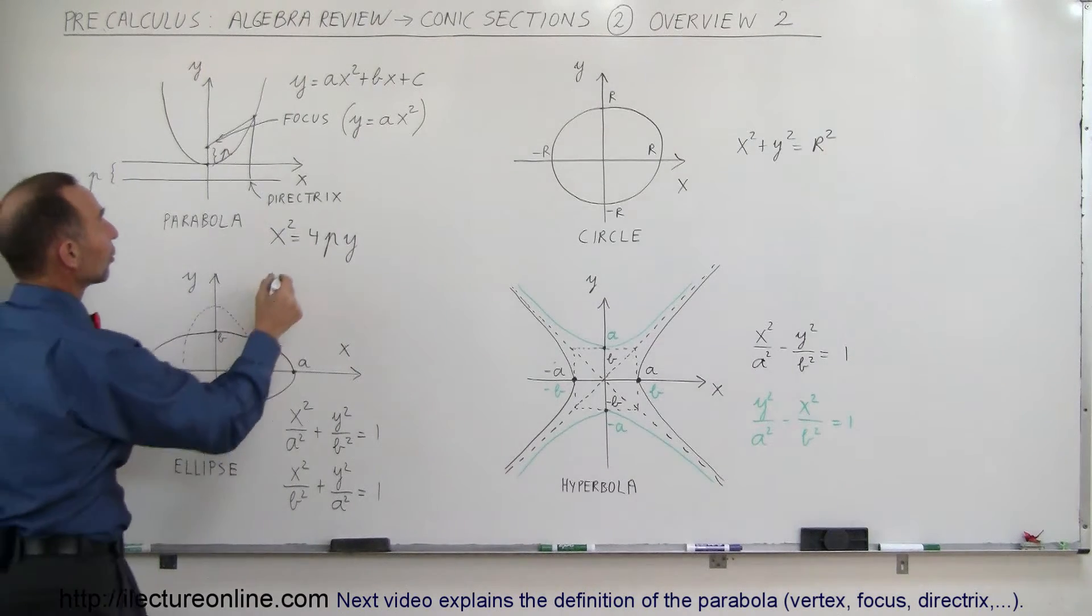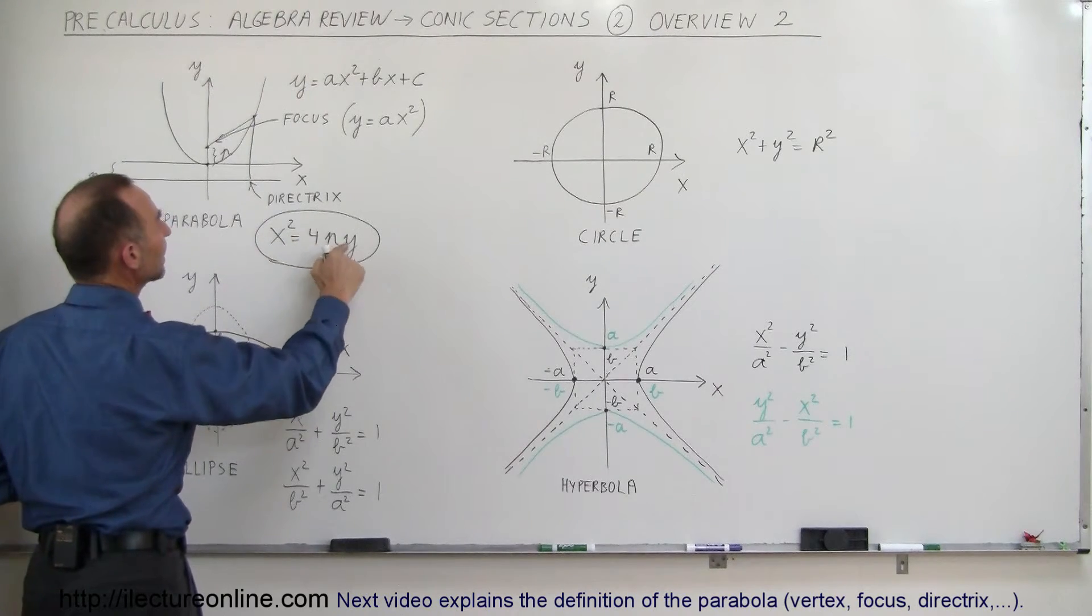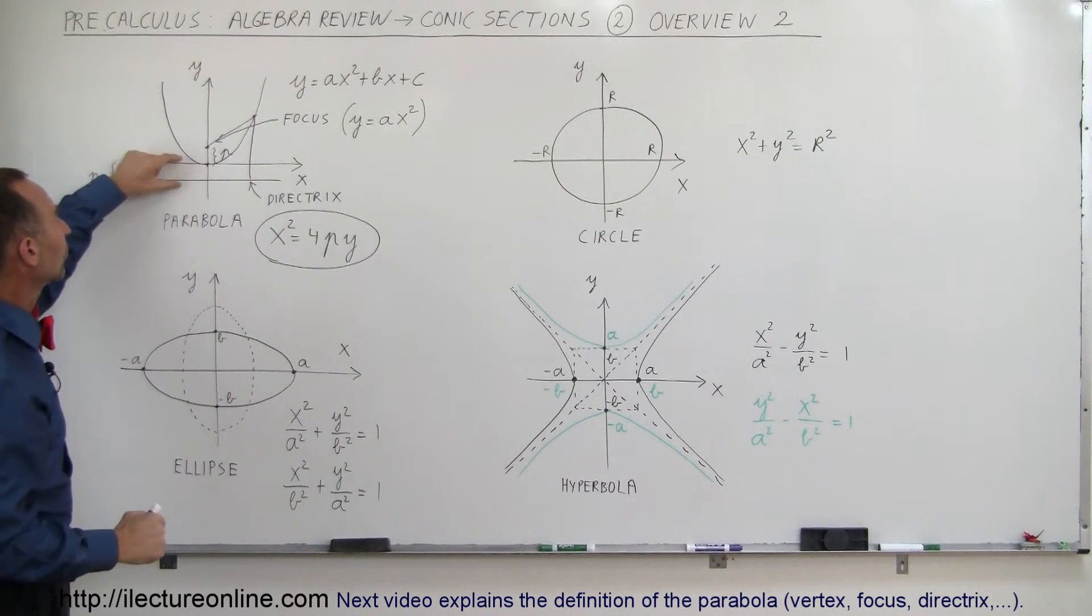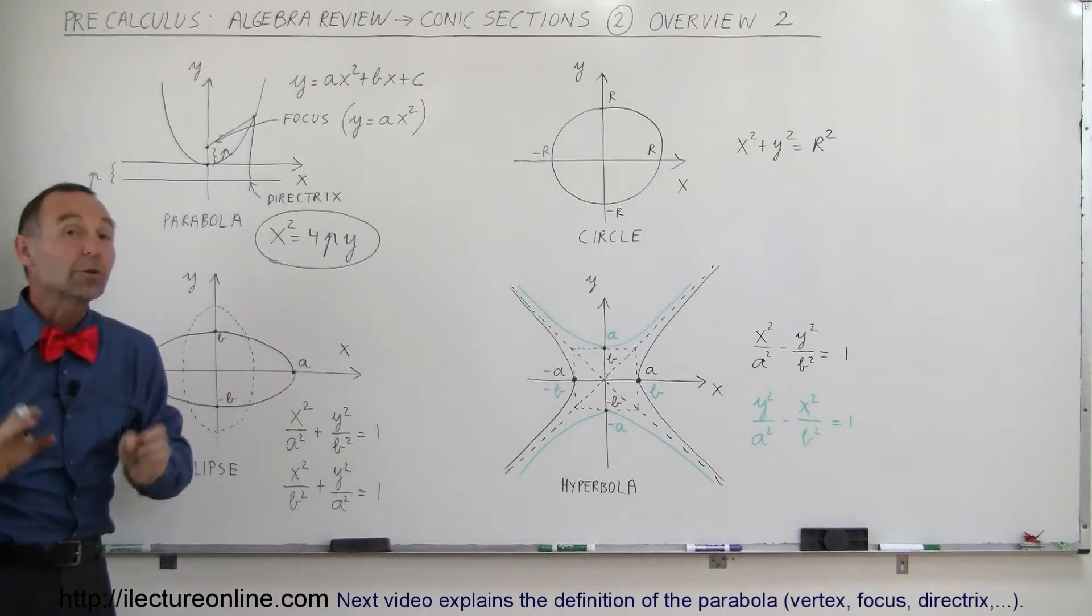And that will give us the general equation that looks like this, where x squared is equal to 4p times y, where p is the distance from the vertex to the directrix and from the vertex to the focus. So we'll see a little bit more detail about that.